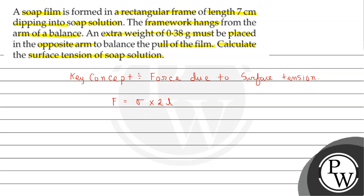So this is the formula and we can solve the question using this formula. Length L equals to 7 centimeter. Since soap solution has two faces, total length is equals to twice L which is equal to 2 multiplied by 7 which is equal to 14 centimeter.